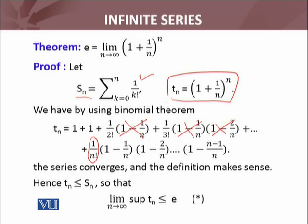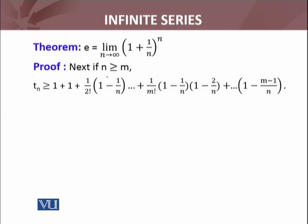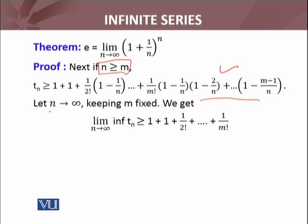The partial sum s_n is defined from the infinite series summation from n equals 0 to infinity of 1 over n factorial. Next, if n is greater than or equal to m, then by writing the binomial expansion with a trick, t_n is greater than or equal to 1 + 1 + 1/(2!) · (1 − 1/n) + ... + (1/m!) · (1 − 1/n)···(1 − (m−1)/n). This inequality holds true.